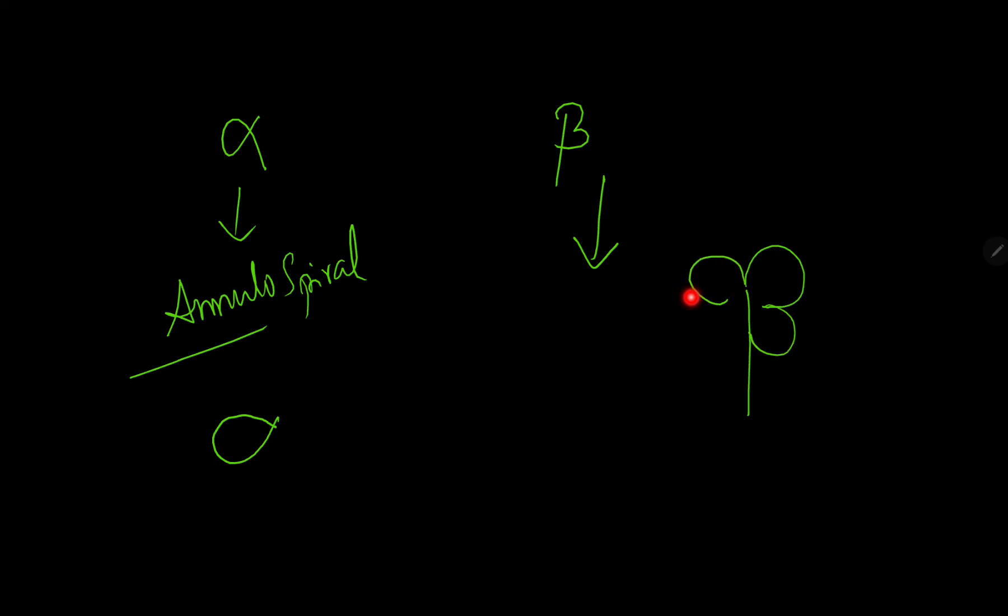With more than one petal—like drawing another petal like this and another like this, it becomes a flower. Thereby, beta fibers have flower spray endings.